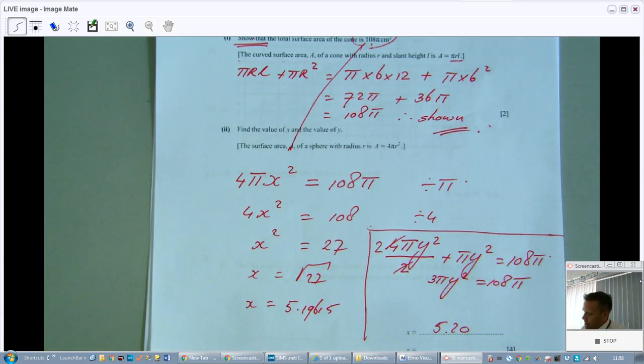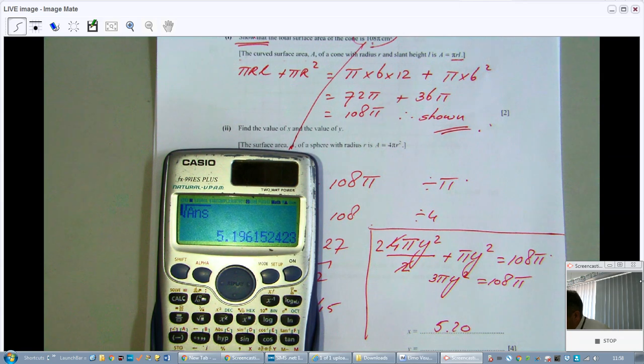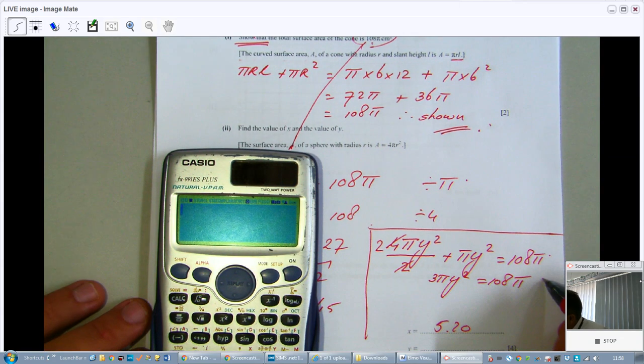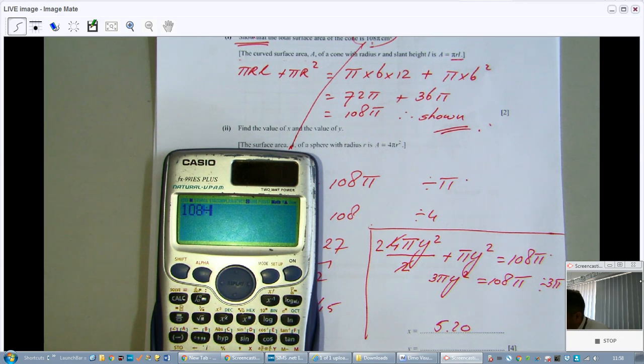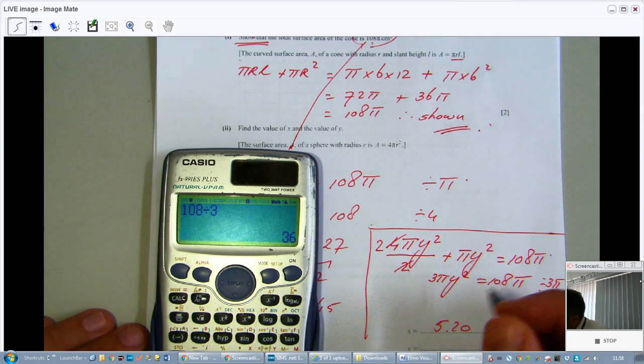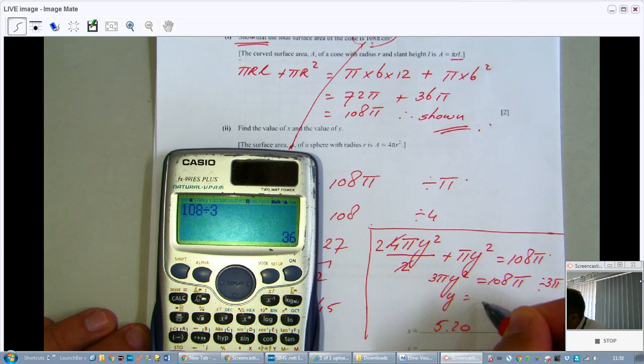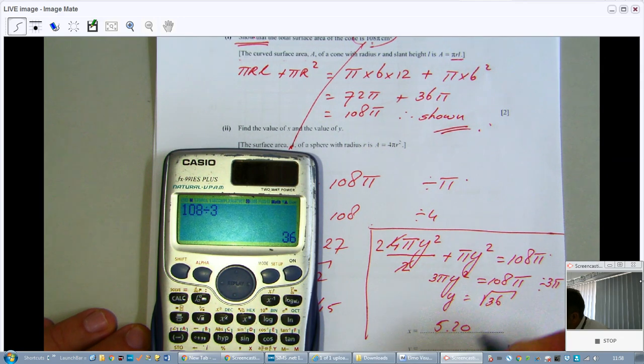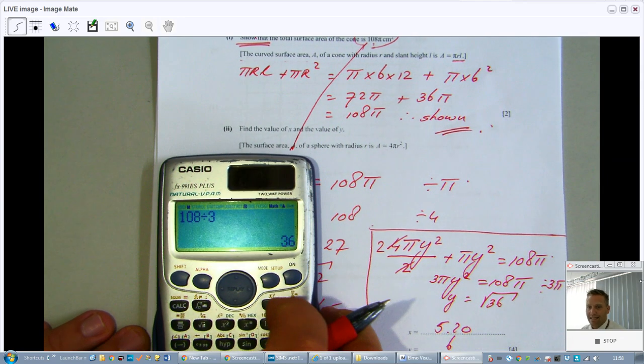Now I'm going to, because I don't have a lot of space left, I'm going to do a few steps at the same. I'm going to divide both sides by 3 pi, so I'm going to divide by 3, what is that, 36 of course. So y will be the square root of 36, so that is going to be 6. Beautiful question.